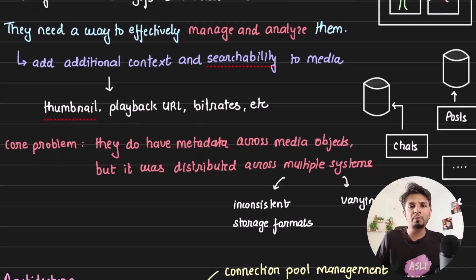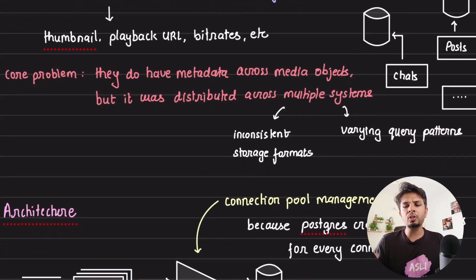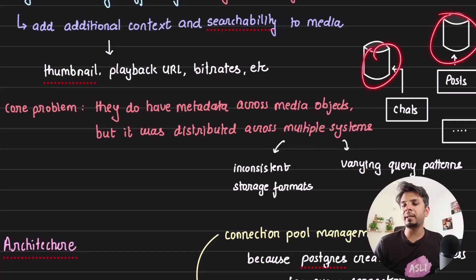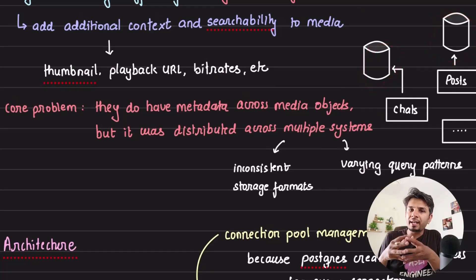What was the core problem? The core problem for Reddit was not that they didn't have the data—they did have the data—but the data was distributed across multiple databases. They wanted a unified place where all the data is stored and queried in a very consistent manner.